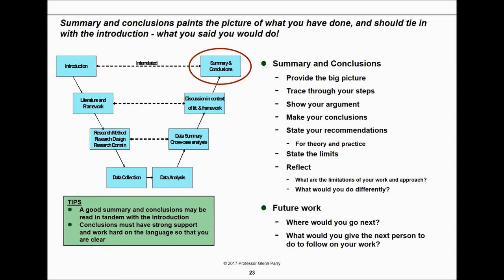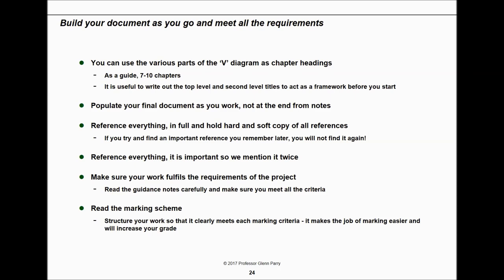The summary and conclusions paints a picture of what you've done — it should tie the whole thing together and be able to be read on its own. Provide the big picture, trace your steps, show your arguments, make your conclusions and recommendations, state the limits, and reflect on what you'd do differently and where you'd go next. Remember: you don't have to do all the research at once — you can note weaknesses for others to study in future work. Conclusions must reference key papers. Work hard on the language so you're really clear, and build your document as you go using the V model structure.